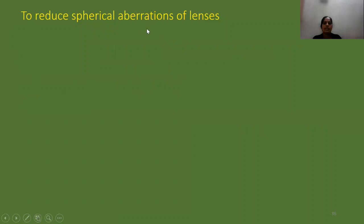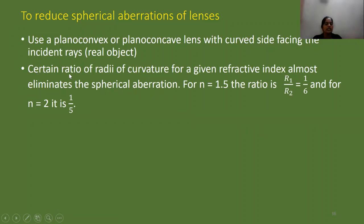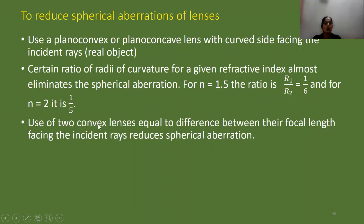To reduce spherical aberration of lenses: use a plano-convex or plano-concave lens with the curved side facing the incident ray or real object. A certain ratio of radii of curvature for a given refractive index almost eliminates spherical aberration. For n equals 1.5, the ratio r1/r2 equals 1/6, and for n equals 2, the ratio r1/r2 equals 1/5. Using two convex lenses with separation equal to the difference between their focal lengths, facing the incident rays, also reduces spherical aberration.